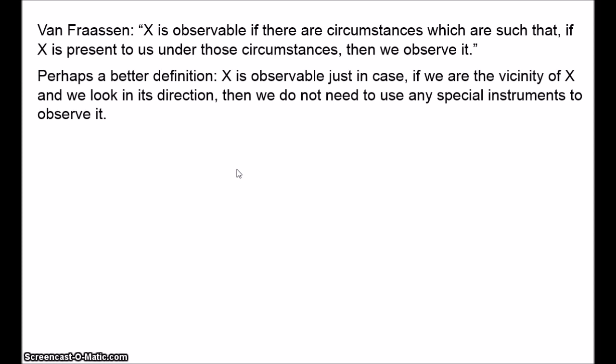That's framed in terms of vision, but we could generalise it to all sensory modalities — if we have our hand on the entity, we won't need any special instruments to feel it. The point is that the moons of Jupiter could be seen if we were to hop onto a spaceship and fly to Jupiter. If we were standing near those moons and looked at them, we would be able to see them. A few people have directly observed, without any instruments, the craters on the moon by actually going to the moon. On the other hand, detecting a Yersinia pestis bacterium will always require instruments. The observable is that which can be detected without instruments; the unobservable is that which requires instruments.